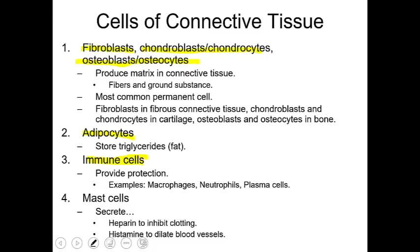Mast cells are also present in blood. Mast cells secrete heparin, a substance that inhibits clotting of blood. For example, deep vein thrombosis — if you sit in the same position for a long time, such as on a long airplane flight, you are at risk for blood clots in your legs. Heparin is a type of blood thinner, meaning it helps inhibit or prevent clotting. People prone to blood clots take blood thinners.